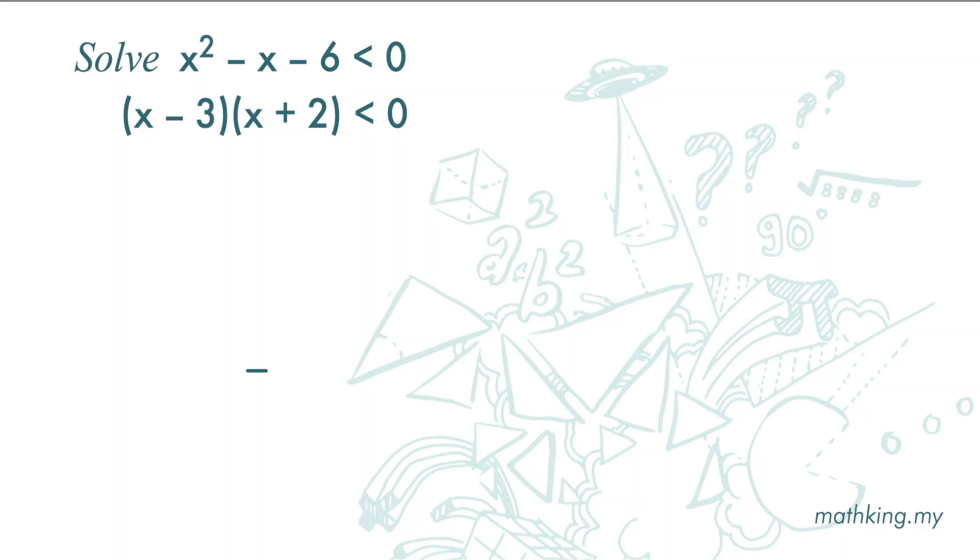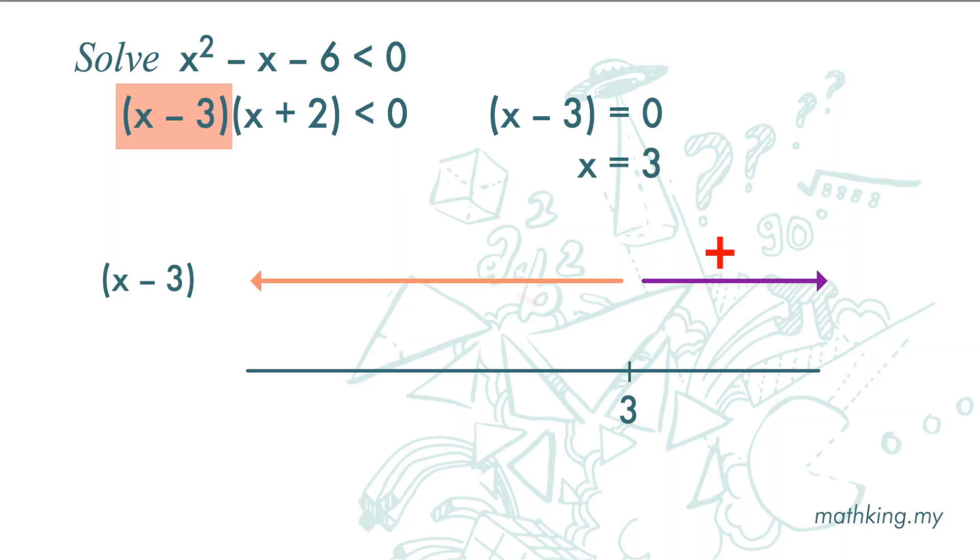Let's draw the number line first. We look at the first term, x minus 3. When x minus 3 equals 0, x equals 3. We mark 3 on the number line for x minus 3. Anything more than 3 will give us a positive result, and anything less than 3 will give us a negative result.